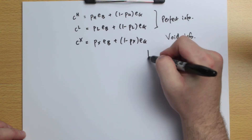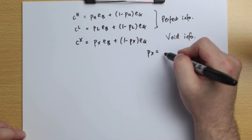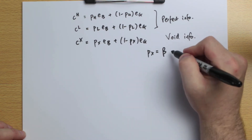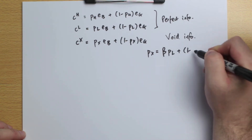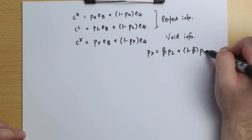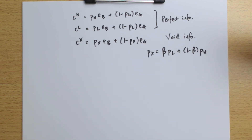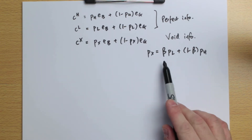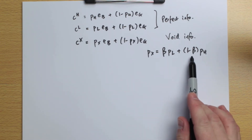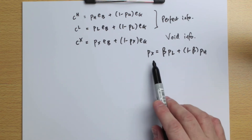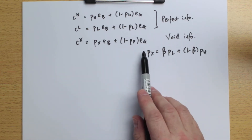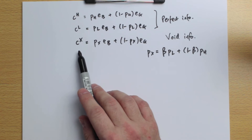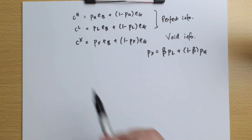Now under void information, the PX term equals beta times pL plus 1-minus-beta times pH. Even though consumers don't know their own types, they know the probability of being low-risk or high-risk, so they calculate an overall probability of ending up in the bad state. They're given a contract that's risk-free and actuarially fair, so it has the same value as their endowment.